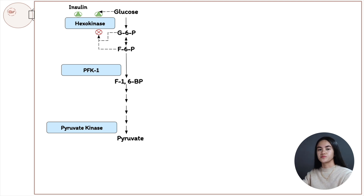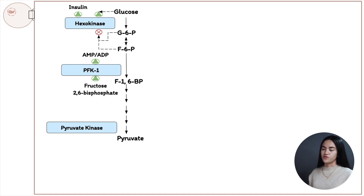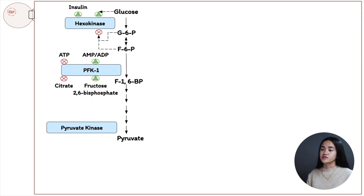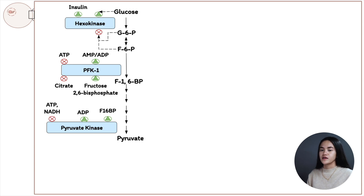The next key enzyme is PFK1, which is stimulated by AMP and fructose 2,6-bisphosphate, and it's inhibited by ATP and citrate. The last key enzyme for glycolysis is pyruvate kinase, which converts PEP (phosphoenolpyruvate) to pyruvate. It's activated by F1,6-BP and ADP, and it's inhibited by ATP, NADH, the hormone glucagon, acetyl-CoA, and long-chain fatty acids.